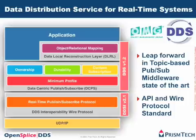If you look at the picture, at the bottom we see that there is a wire protocol interoperability standard called DDSI, and today we are at version V2.1. This requires as a basic assumption only the availability of UDP-IP. And then on top of this, there is the API standard called DDS, and today we are at version V1.2.